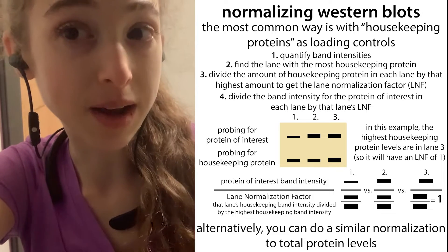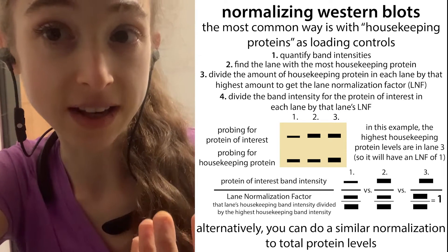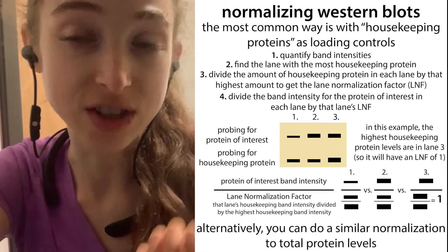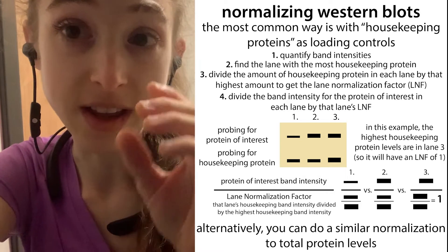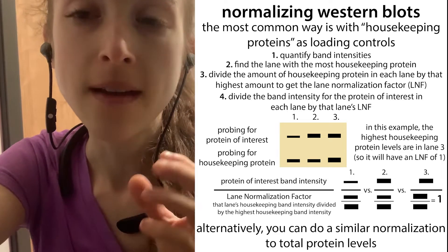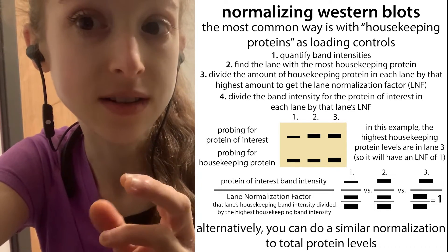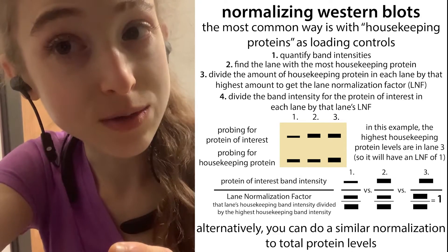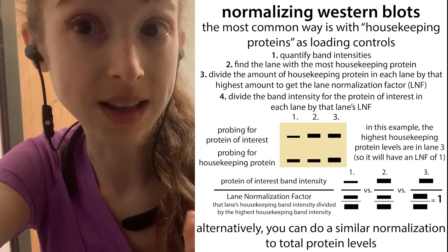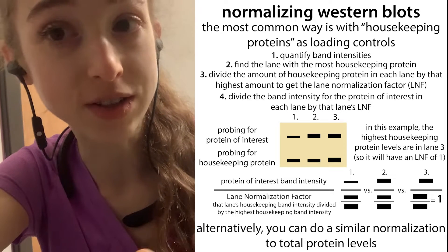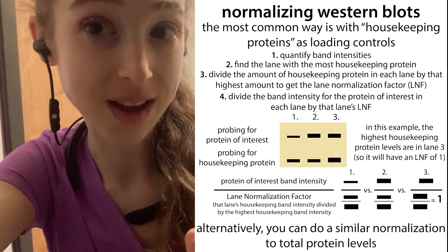It's not quite as simple as just dividing by the signal for your housekeeping gene. For a western blot, you need to calculate the lane normalization factor (LNF) for each lane. You measure the intensity of each band, find the lane with the highest amount of signal for the housekeeping protein, and for each lane divide that lane's housekeeping protein signal by the highest one. This gives you the LNF — for the lane with the highest amount it will be one, for the others less than one. Then take the signal for your protein of interest for each lane and divide it by that lane's LNF to compare across all lanes.